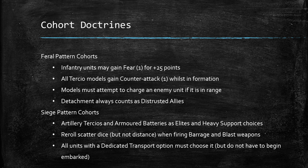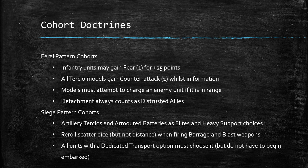The Feral Pattern Cohort represents troops from less technologically advanced feral worlds. You can give infantry units fear for 25 points per unit, which is expensive given how cheap and fragile the units are. They also get counter-attack one for infantry models in a tertio while in formation, but you don't really want these guys in melee anyway. They must charge if there's an enemy in charge range, and the detachment always counts as distrusted allies if in an army with other detachments. Very flavorful but not very powerful.